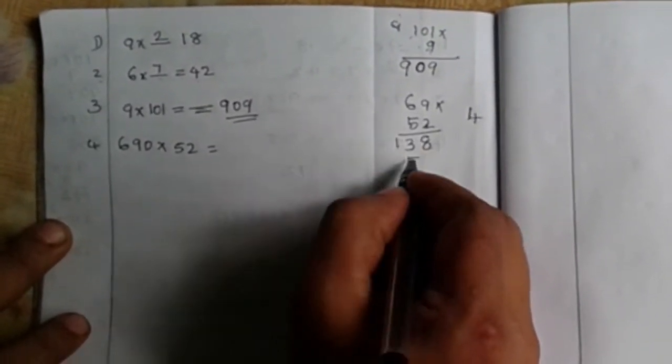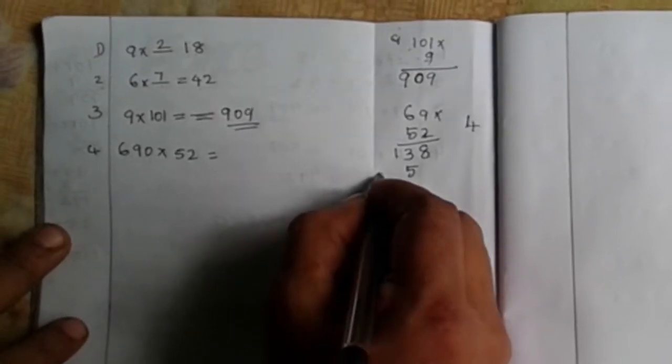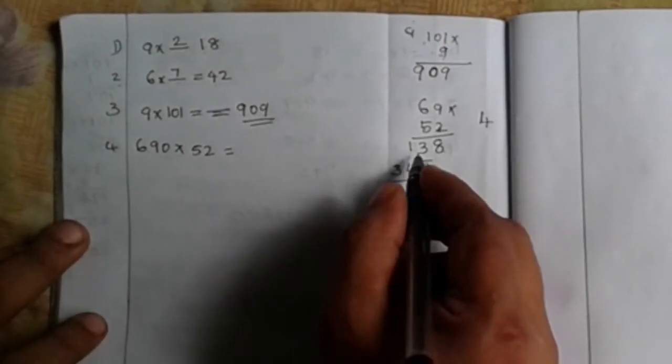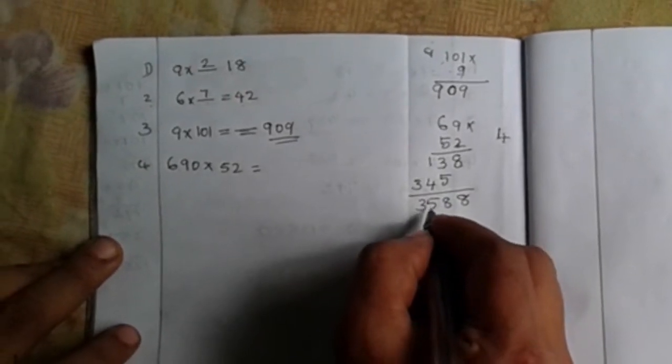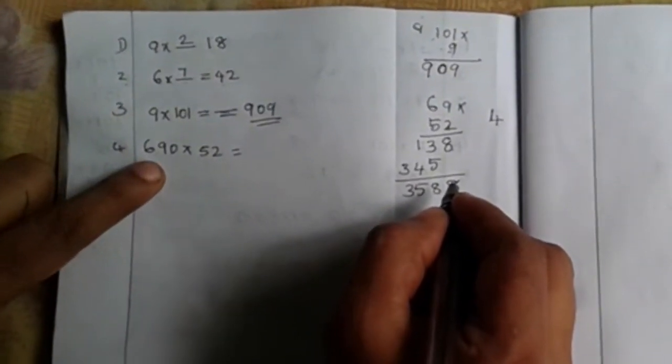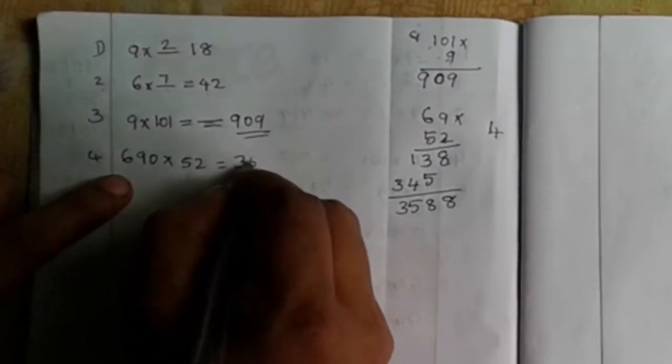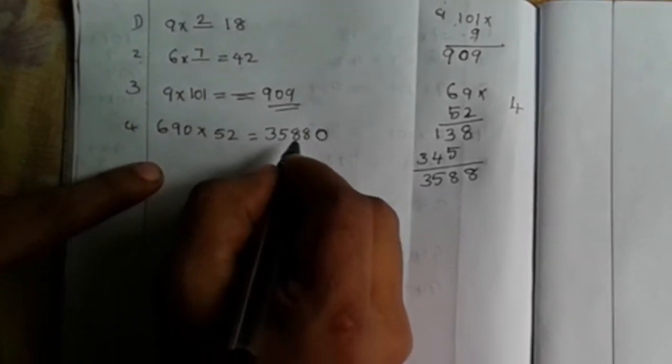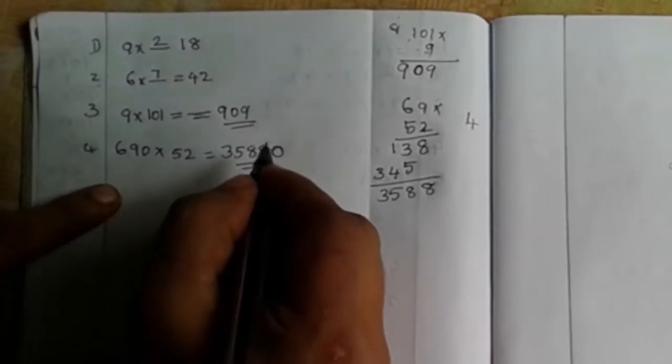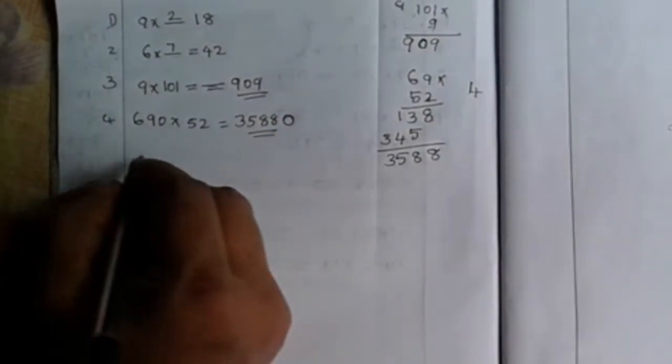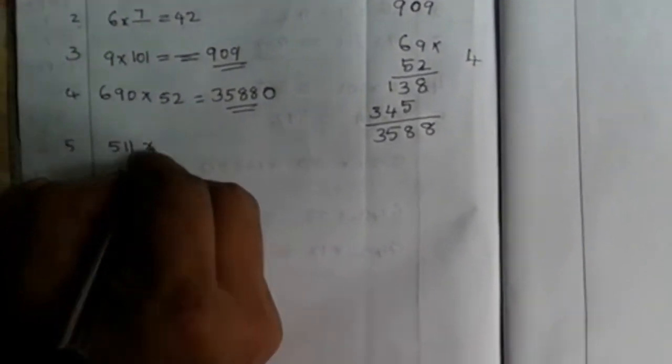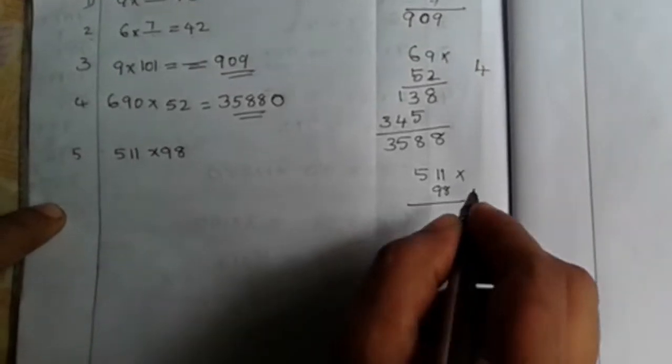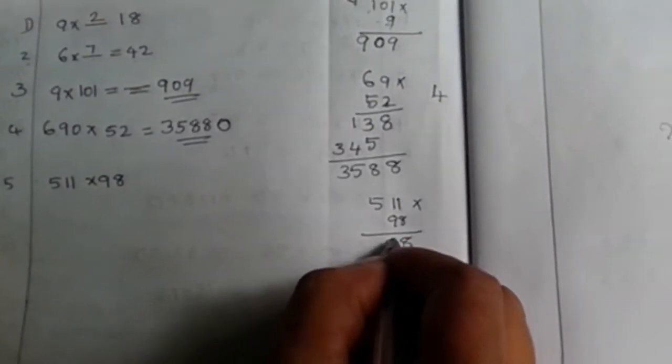This is the same thing. There are 24. We have to do this again. 5x8 is 40. This is the answer: 38,880.